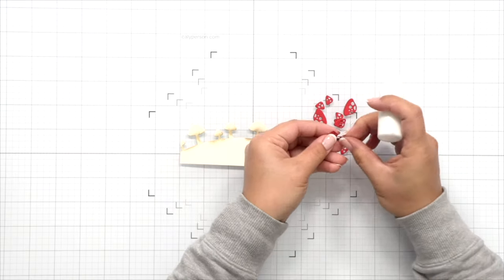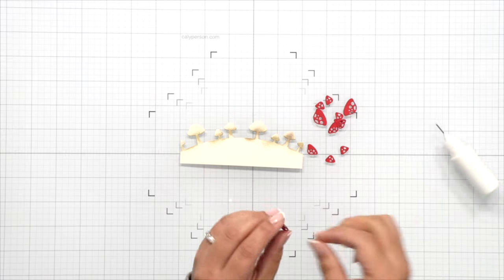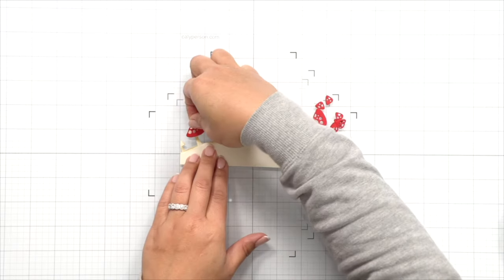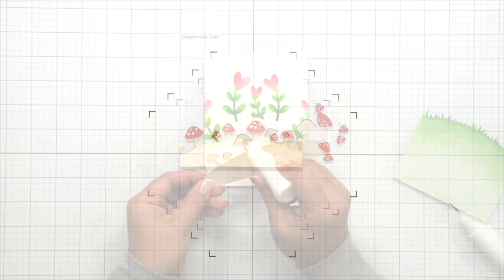We're going to cover up those tops with these mushroom heads that I die cut using red barn ink and then we're going to cover up the bottom of this mound with the grassy border die that we die cut in the previous step.